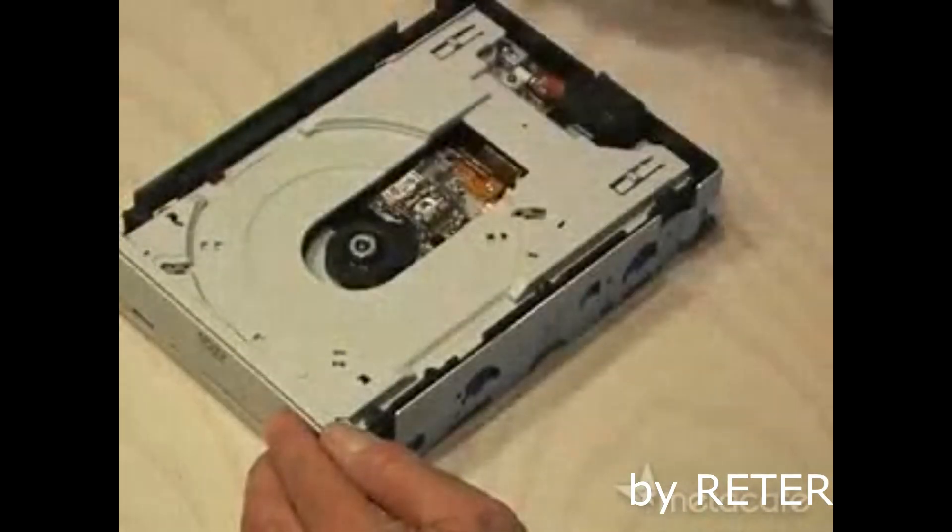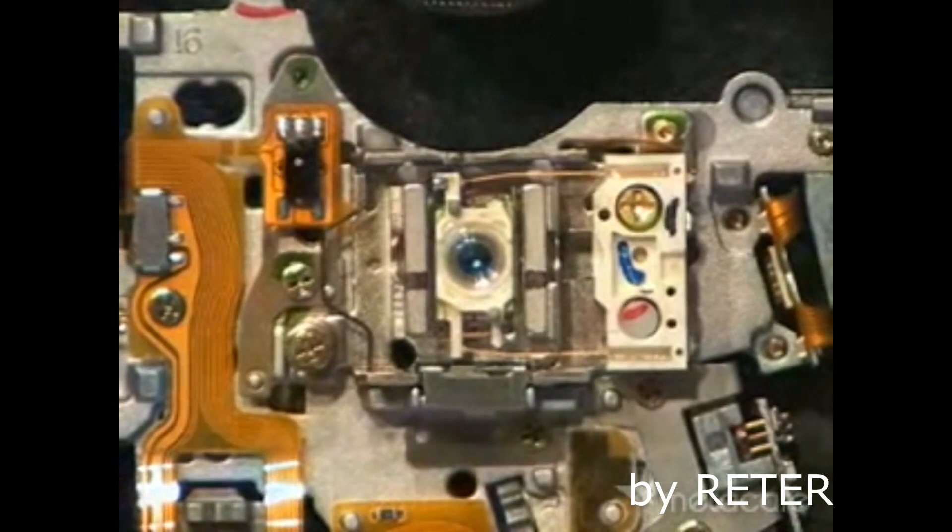Remove all the screws and take apart the case. Remove the drawer to expose the carriage assembly. That's where you'll find the powerful laser diode.